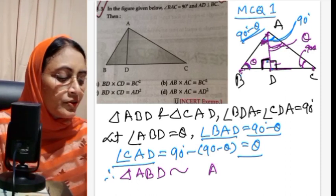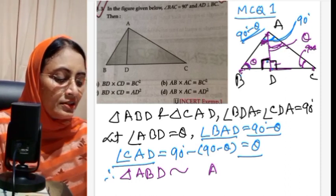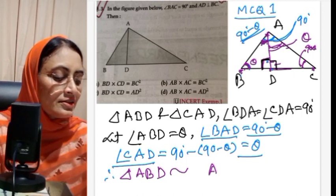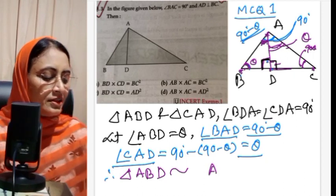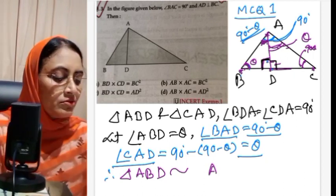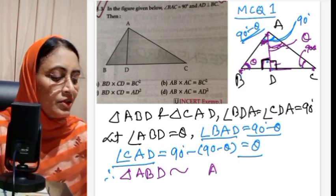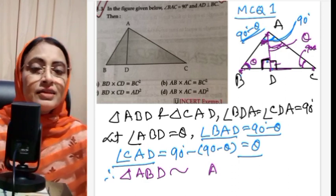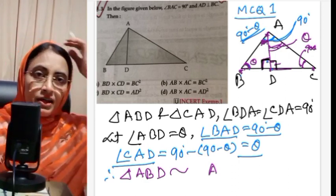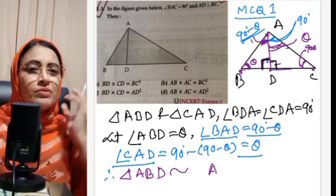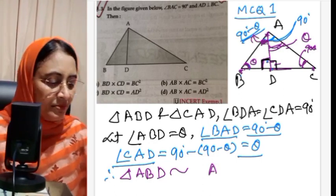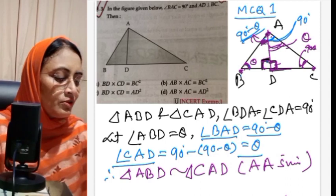Next, this angle is 90 degrees and this angle is 90 degrees. A is (90 minus theta) and C is (90 minus theta). So angle ADB is 90 degrees and angle ADC is 90 degrees, angle A corresponds to angle A. By AA similarity, triangle ABD is similar to triangle CAD.